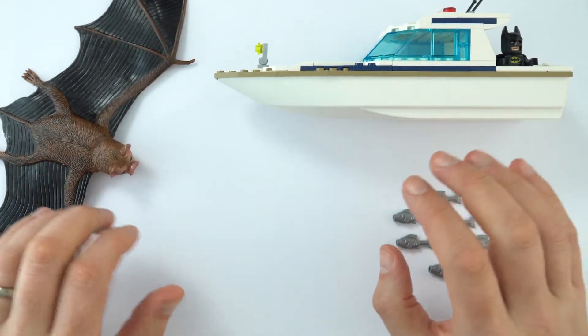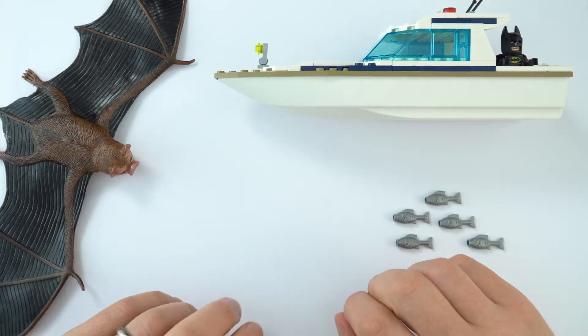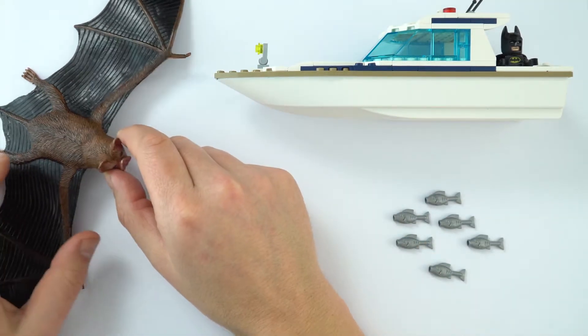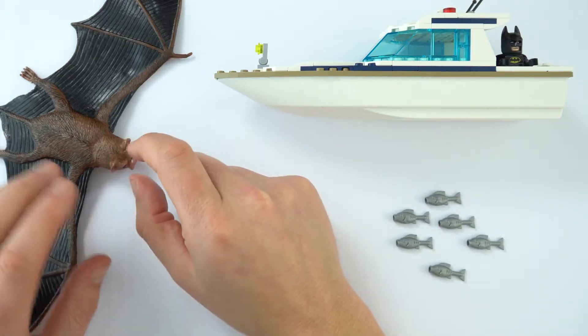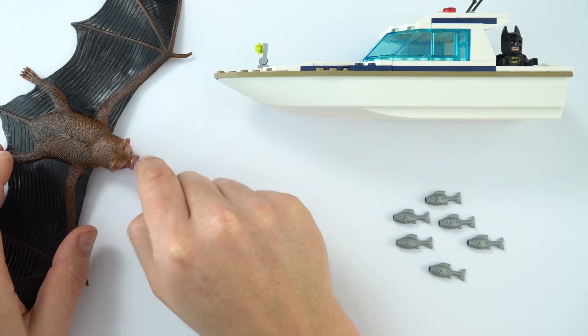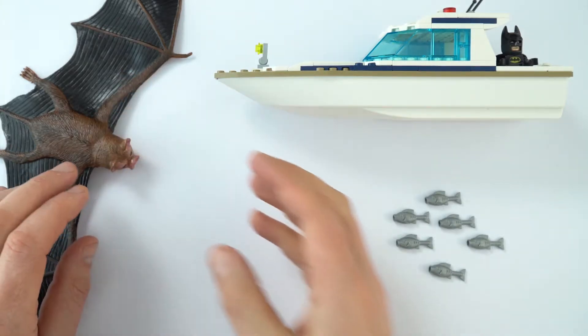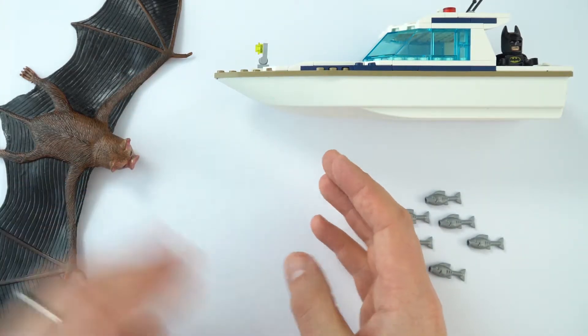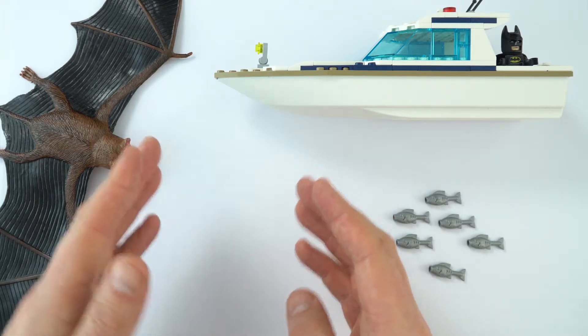Well both of these things use echo location. Now for a bat, it sends out a really high-pitched signal above 20,000 hertz, it's actually out of the audible range of humans, but it sends out this ultrasound signal. It comes away from the bat, reflects off the prey, and then some of that signal is bounced back.